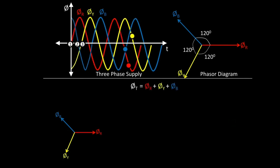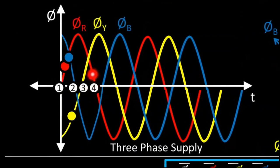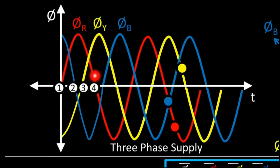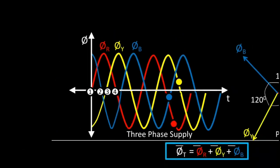Now let's consider instant 4. At instant 4, we can see the red flux φR is 0 — it intersects with the x-axis. Then φY is positive (upward), and φB is downward so it is negative. So at instant 4: φR = 0, φY = positive, and φB = negative.